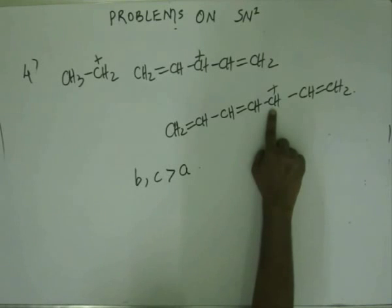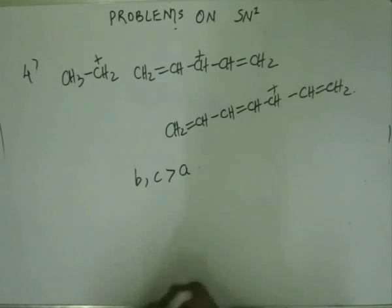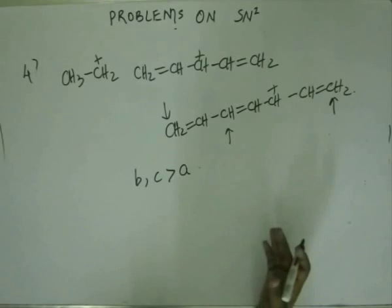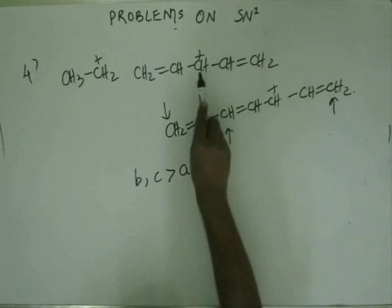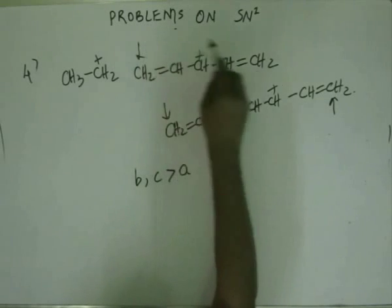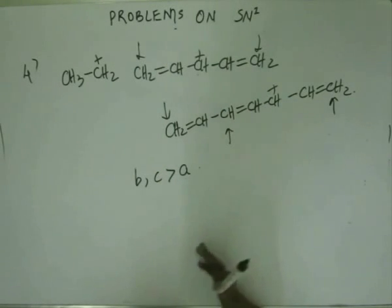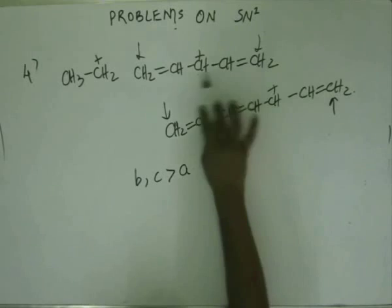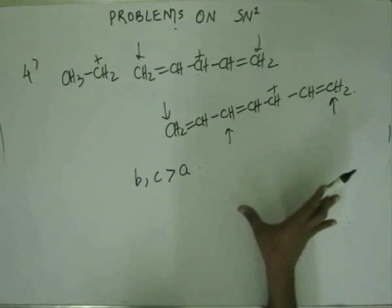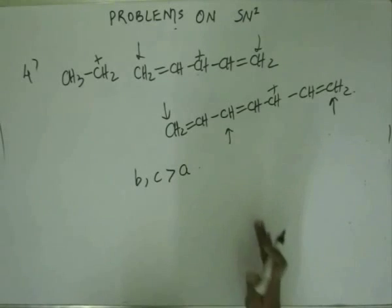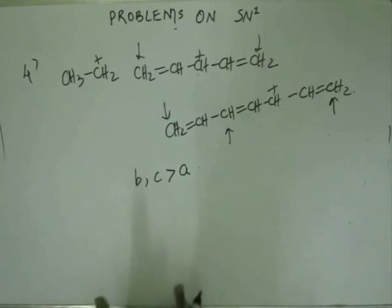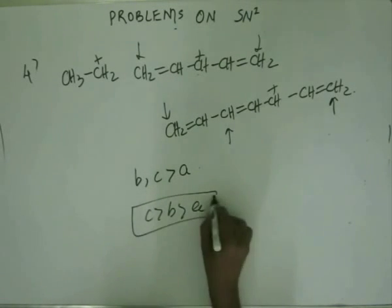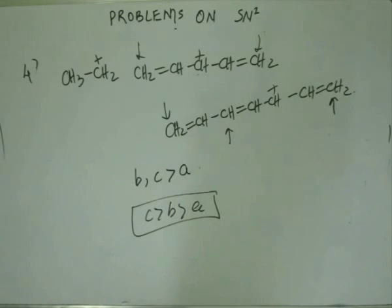So this plus charge is going to be shared across three positions — though we can't say exactly 33% because the stability of all the resonance structures may differ. Technically, to say the extent of resonance in C is greater, we need to see this more carefully. When we are full-fledged studying different reactions, then the greater extent of resonance in C versus B will become clearer.